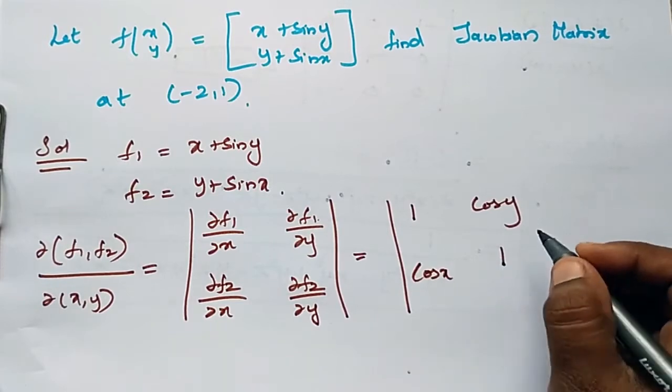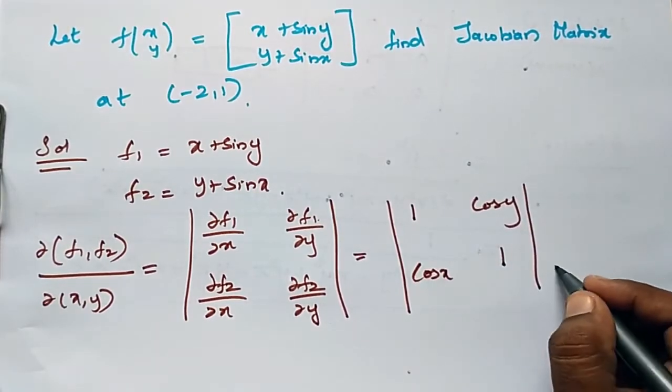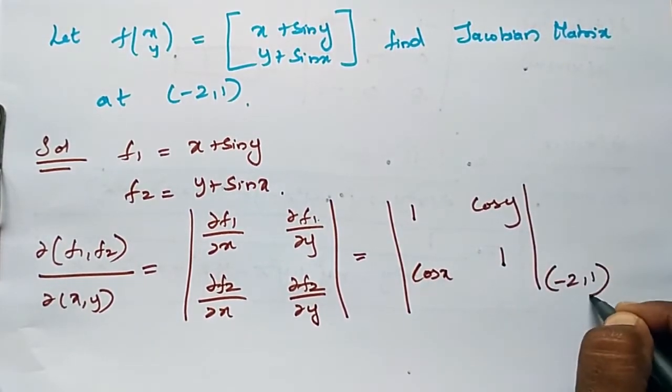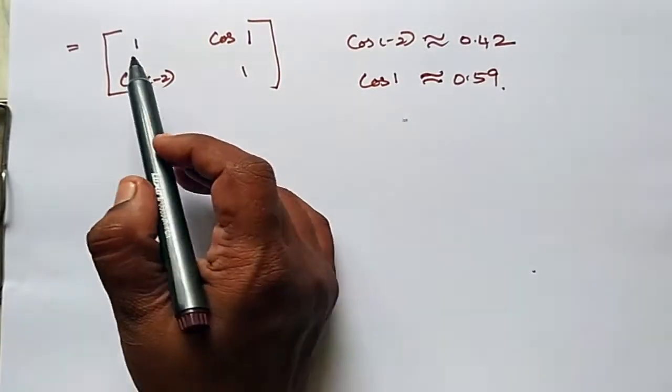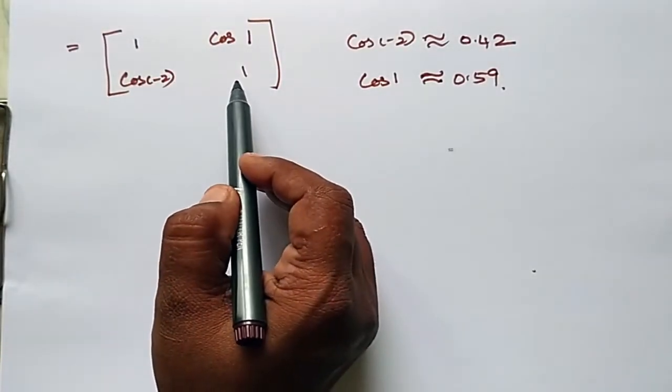Now evaluate at (-2, 1). The matrix becomes [1, cos(1); cos(-2), 1].